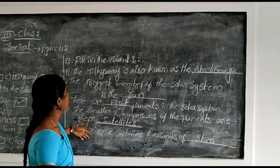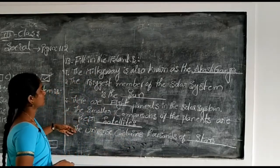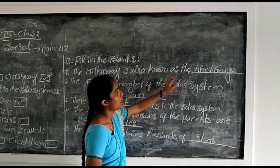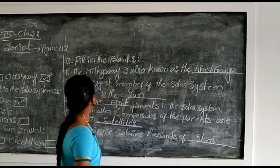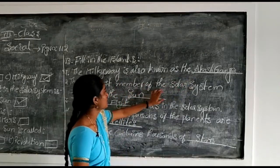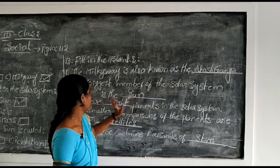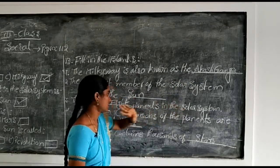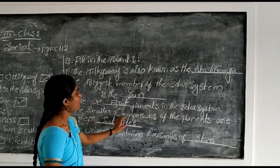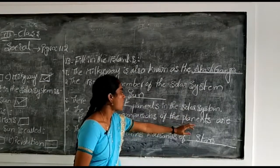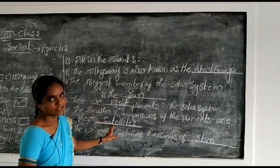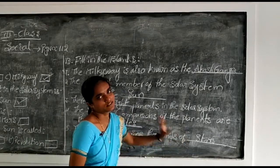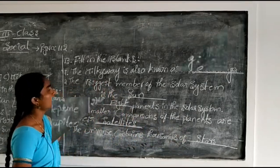These are all fill in the blanks for section B. The Milky Way is also known as Akash Ganga. The biggest member of the solar system is the sun. There are eight planets in the solar system. The smaller companions of the planets are satellites. The universe contains thousands of stars.